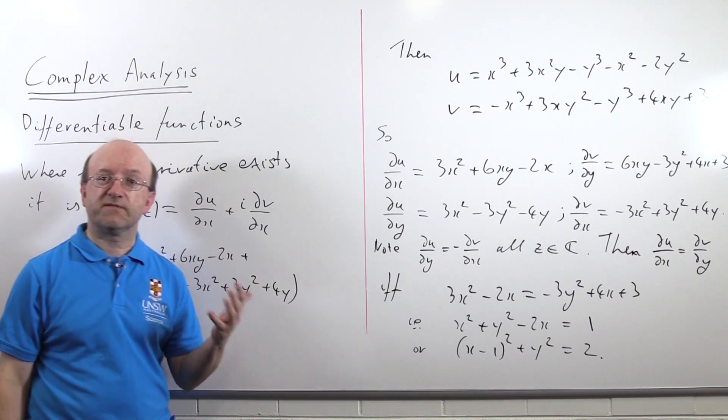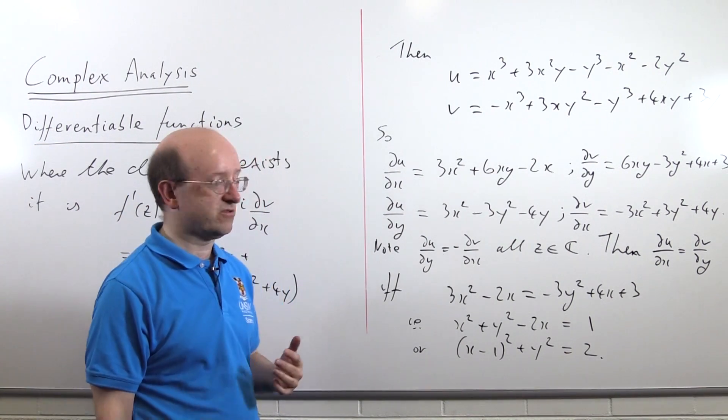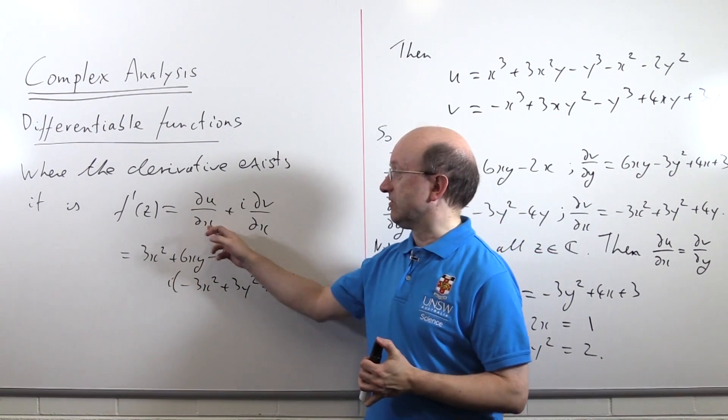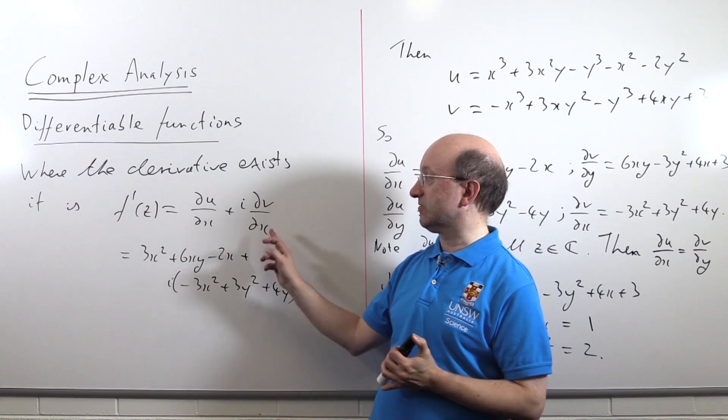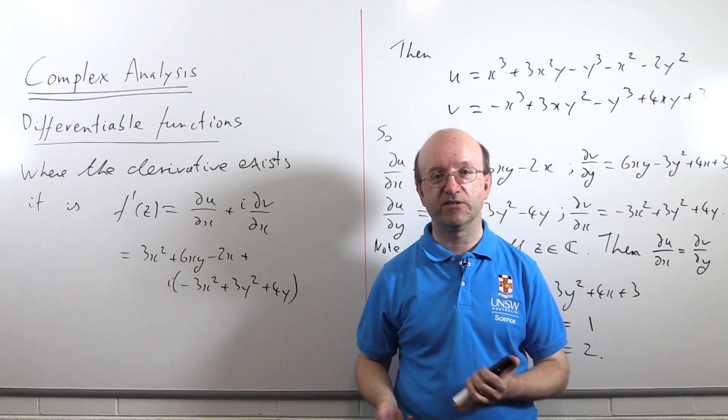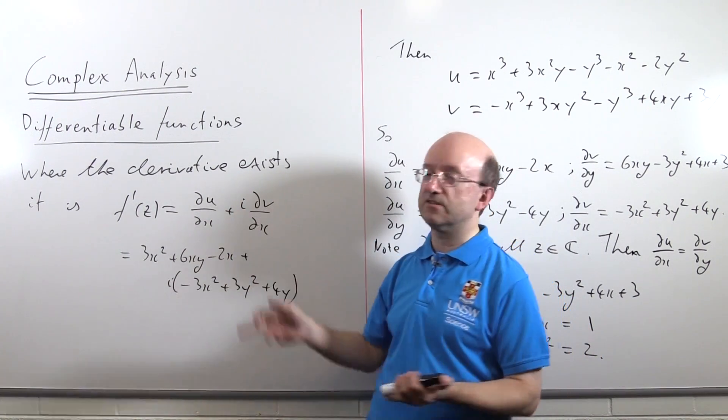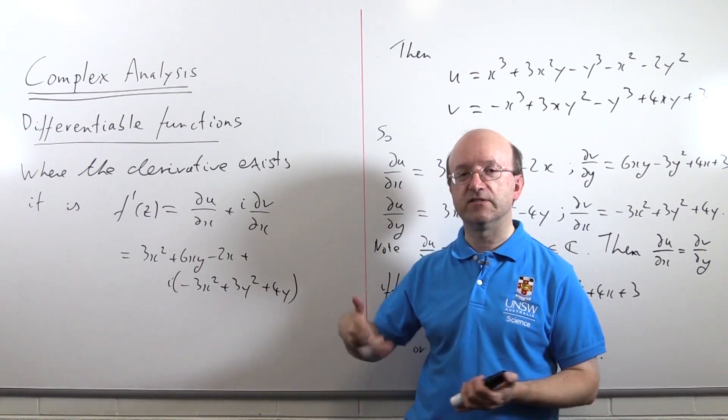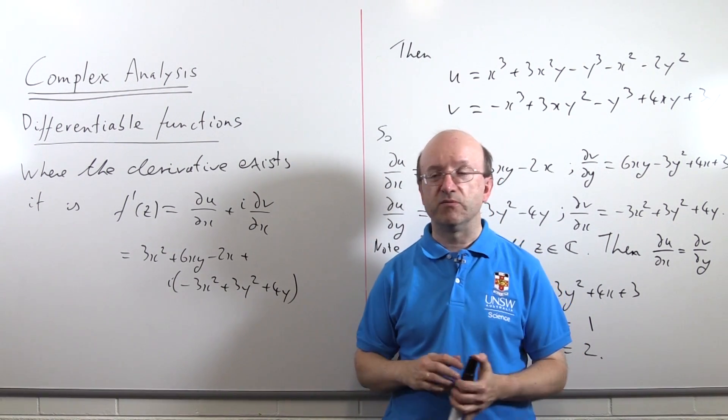Now, there are several other ways you can write the derivative by using the Cauchy-Riemann equations. You could write du dx plus i dv dx. Of course, dv dx is minus du dy, so it's also du dx minus i du dy, etc. Any one method will do.